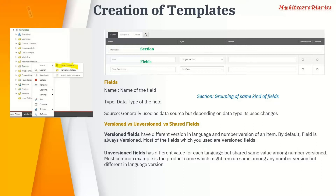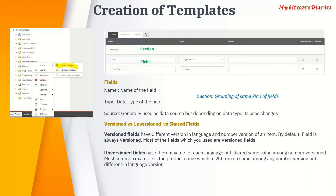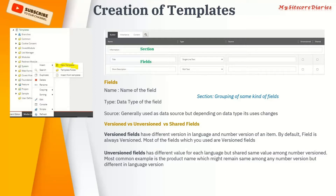Then you have an unversion field. To clarify: an unversion field will have a different value in each language — so English and English Canada can have different values — but within the same language, all number versions will share the same value. So if English Canada has three number versions, all three will have the same value.